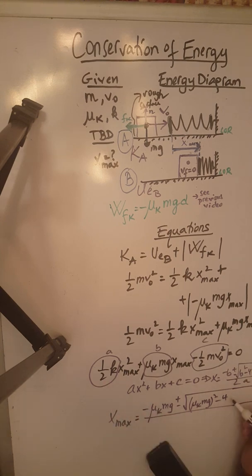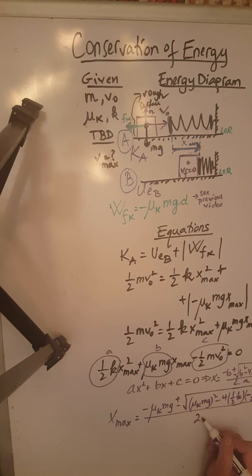4a, which is 1 half K, C, which is another negative, 1 half M V naught squared, all over 2a, which is 2 times 1 half K.